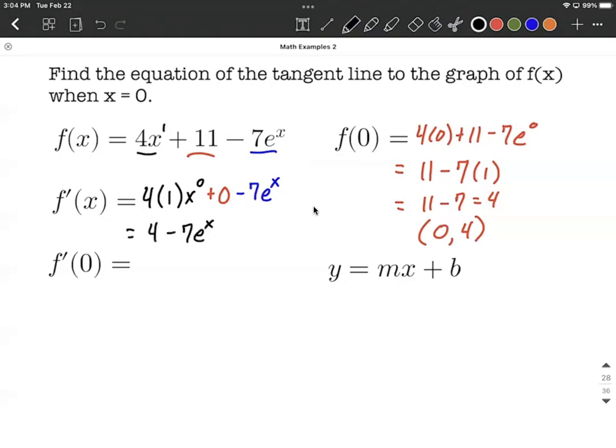Finally, evaluating the derivative at zero, we plug in zero for x. We have f'(0) = 4 - 7e^0 = 4 - 7(1) = -3. This is the slope of our line.